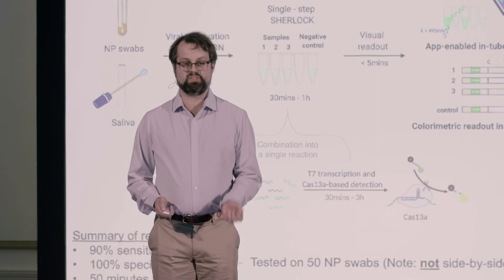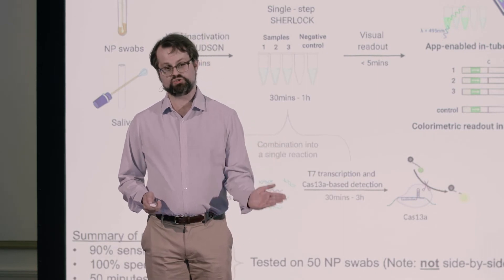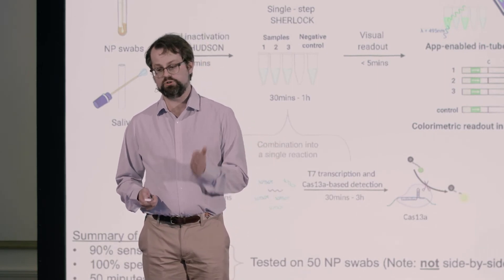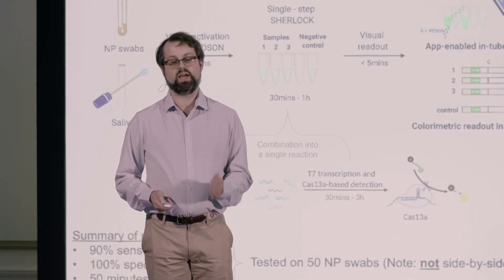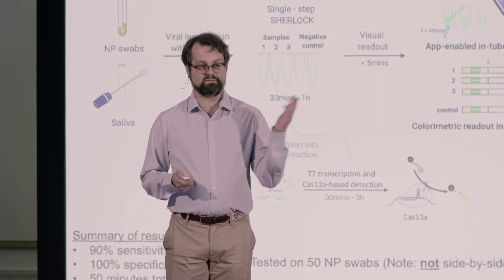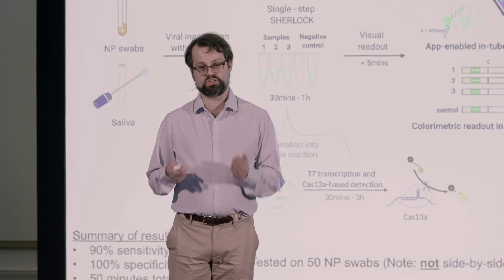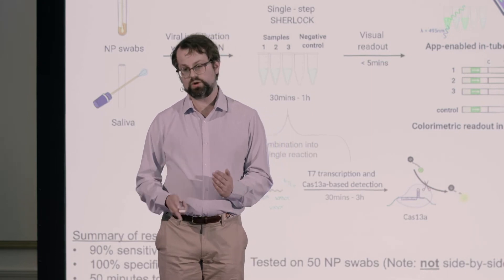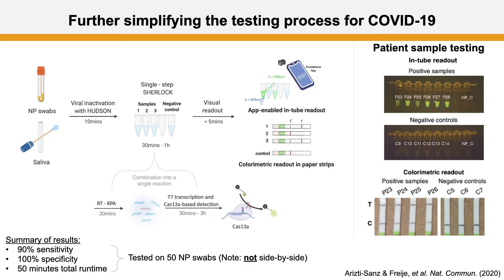We have both that paper strip readout I showed you earlier, as well as a fluorescent in-tube readout where the tube itself starts to glow. You can see on the side of the slide some examples in action, where we're able to detect patient samples using this method — either with the in-tube fluorescent readout or with the paper strip readout.